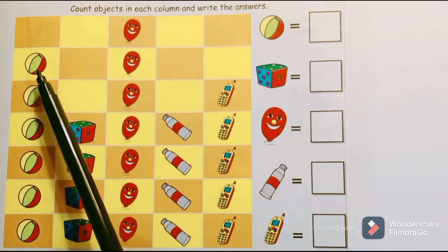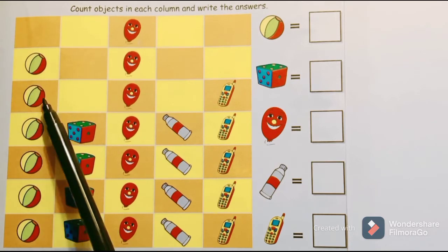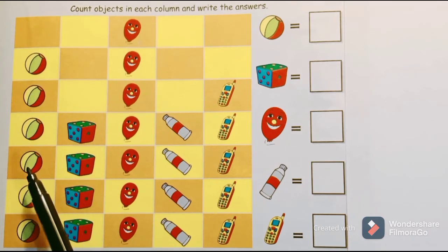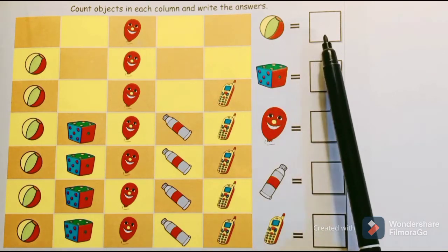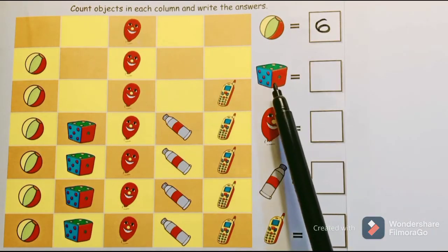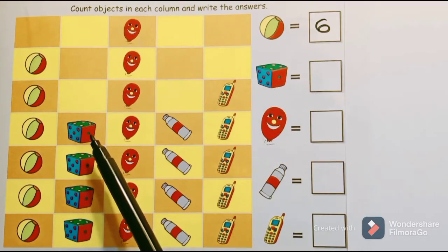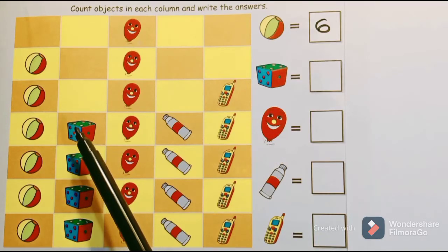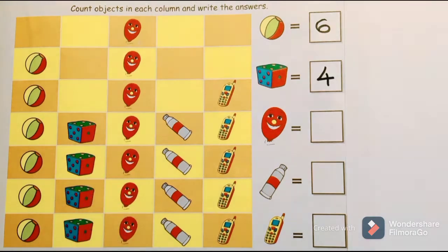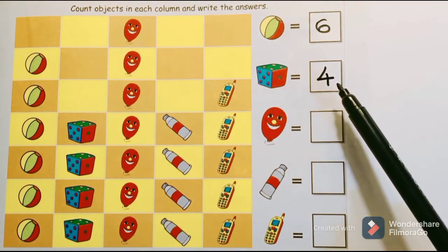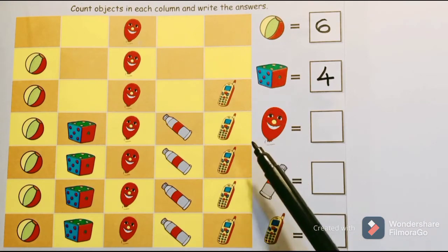The first object is a ball. Let us count: one, two, three, four, five, six — there are six balls. The second object is a die. Let us count: one, two, three, four — there are four dice.